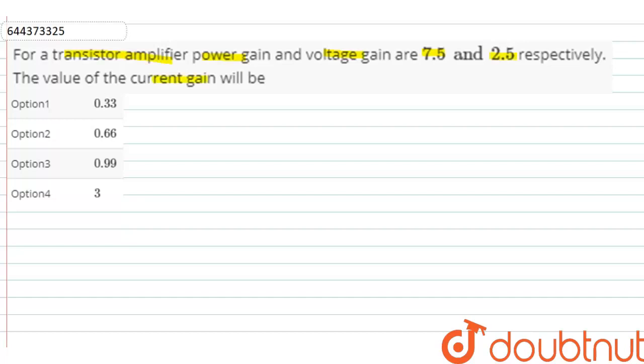The value of the current gain will be: Option 1: 0.33, Option 2: 0.66, Option 3: 0.99, Option 4: 3.